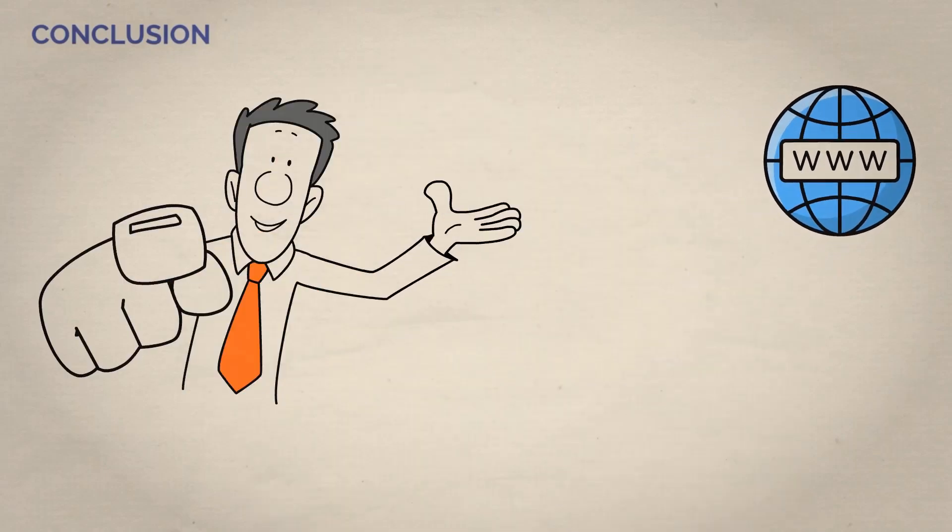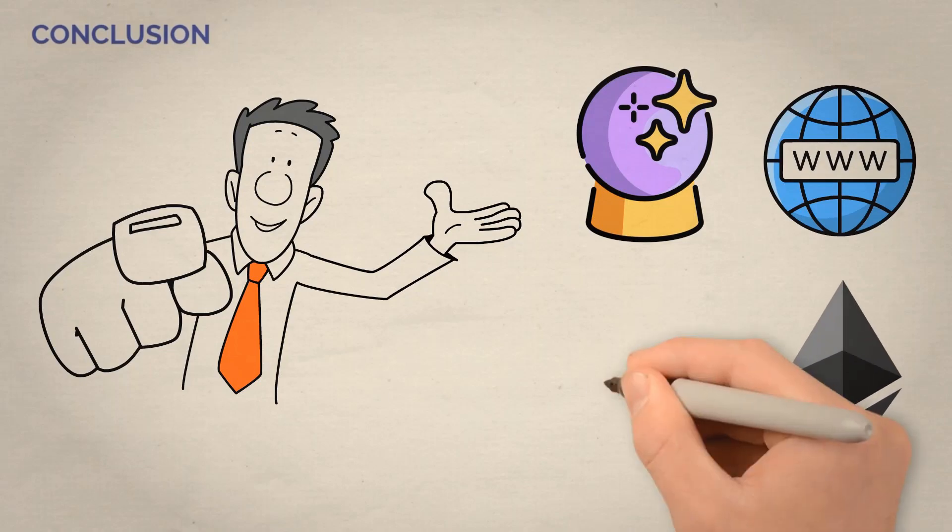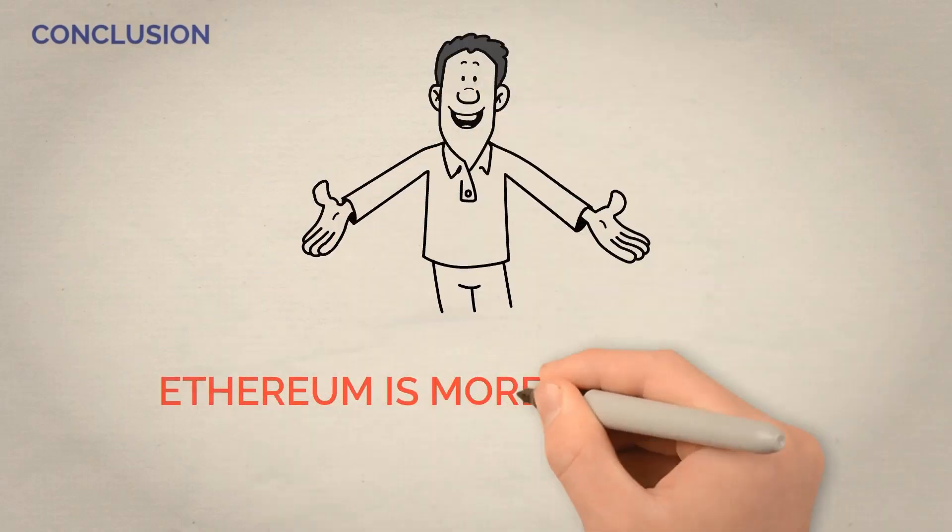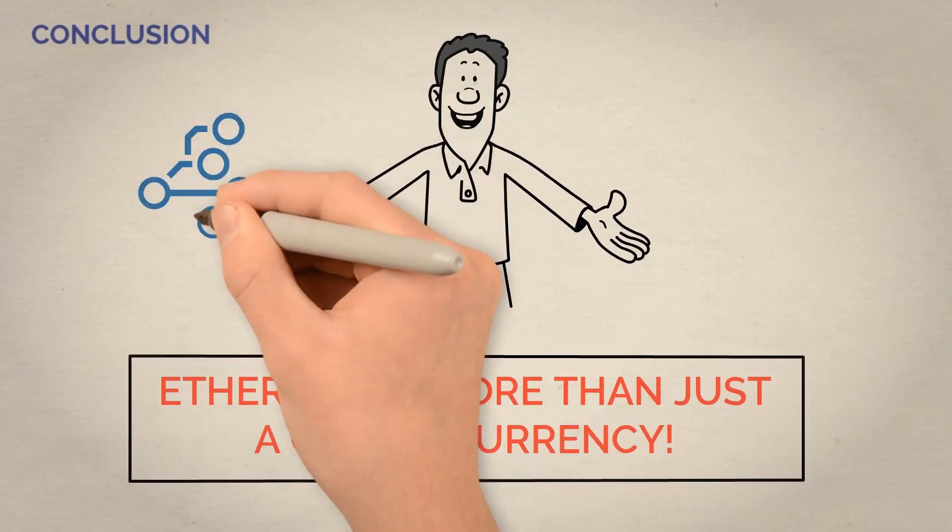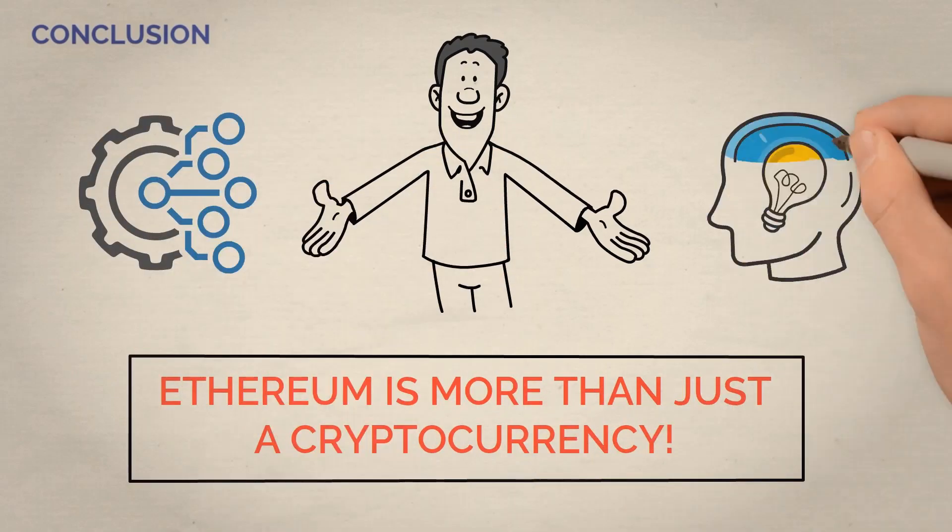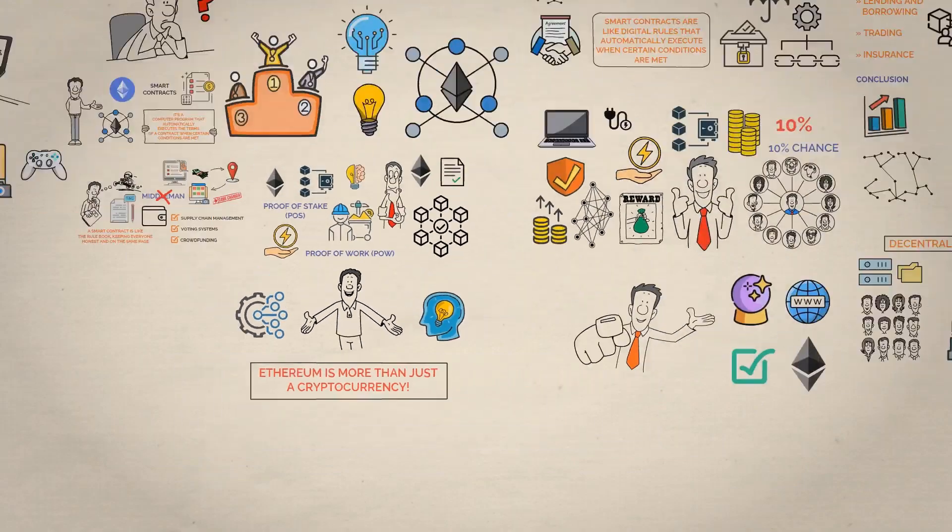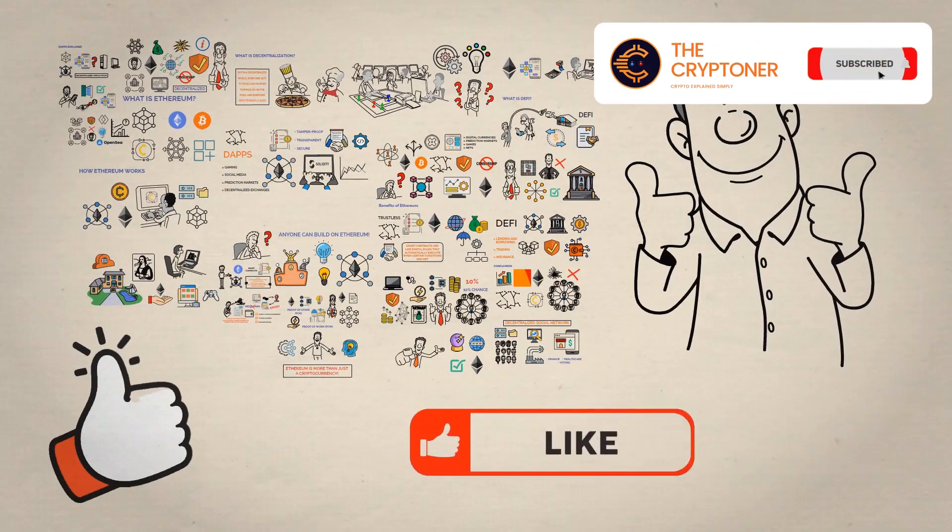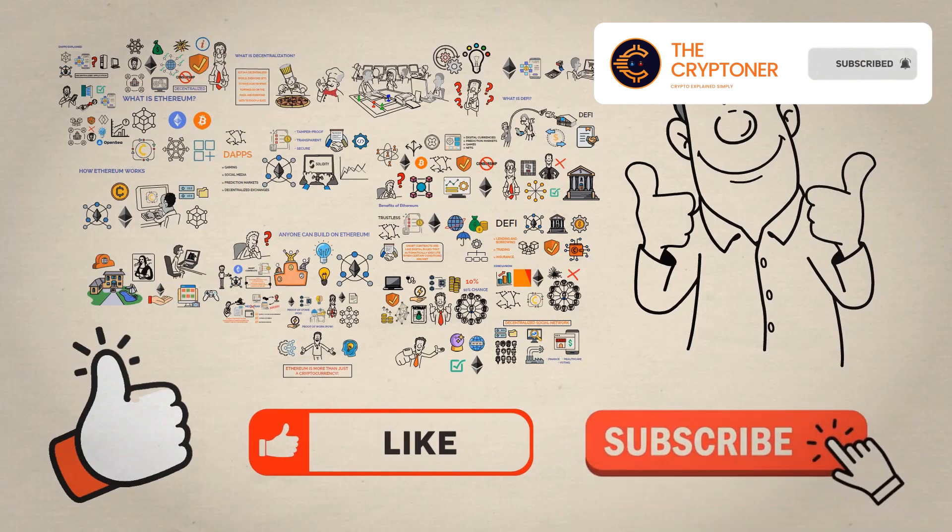Ethereum can reshape the internet and the world as we know it. So are you ready to join the revolution and be a part of shaping the future? Because Ethereum is here and the future is now. So there you have it. Ethereum is more than just a cryptocurrency. It's a revolutionary technology changing our thoughts about the internet and what's possible. Thanks for watching. Please click the thumbs up button and don't forget to like and subscribe for more content like this.